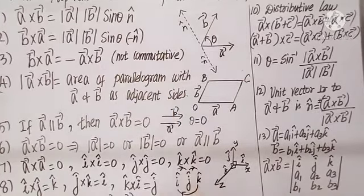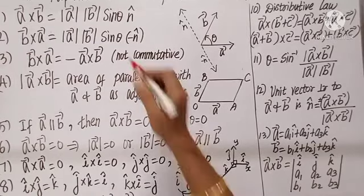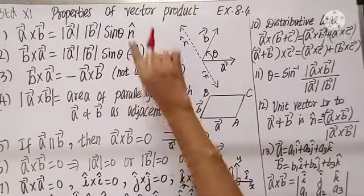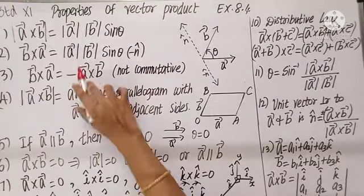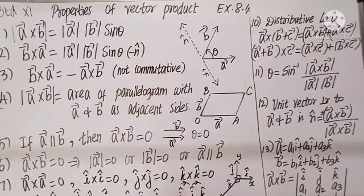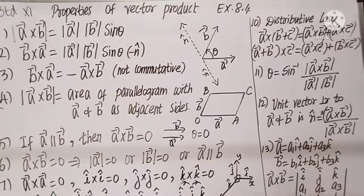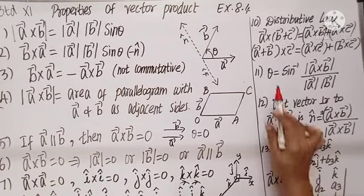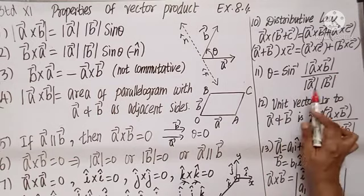From the formula A cross B = mod A · mod B · sin theta · n-cap: when I don't want n-cap, I take the modulus since modulus of n-cap is 1. So the modulus of A cross B equals mod A · mod B · sin theta. From here, sin theta equals mod(A cross B) divided by (mod A · mod B), and theta equals sine-inverse of mod(A cross B) divided by (mod A · mod B).